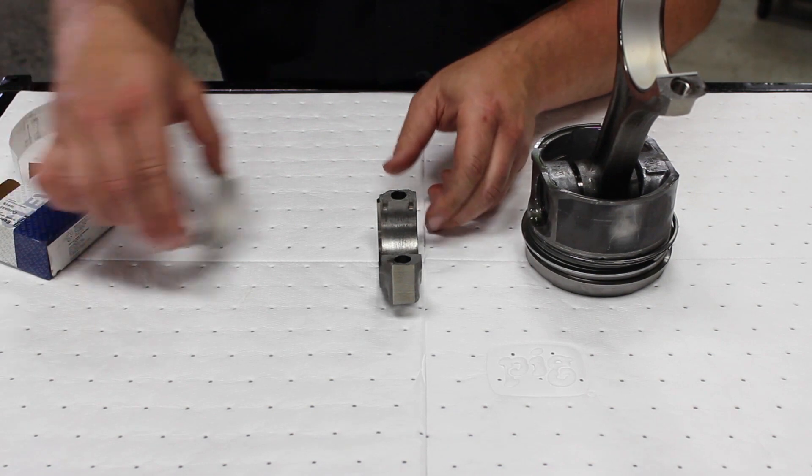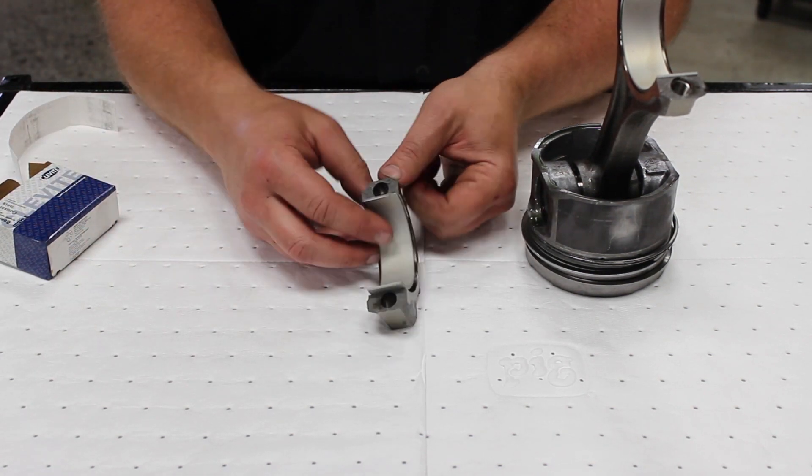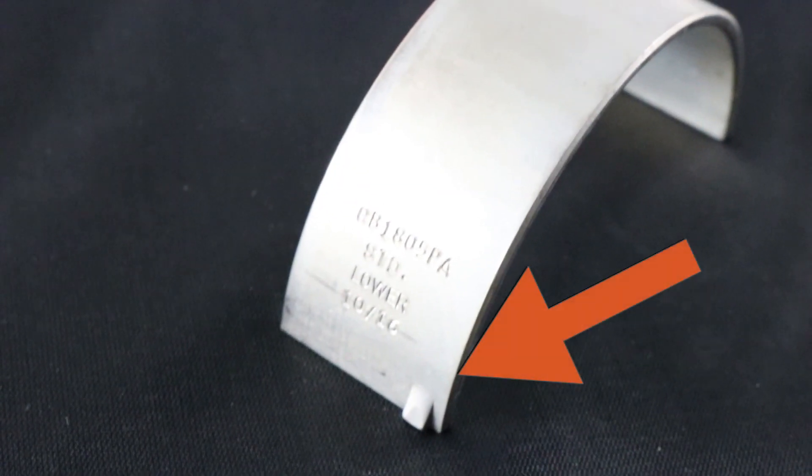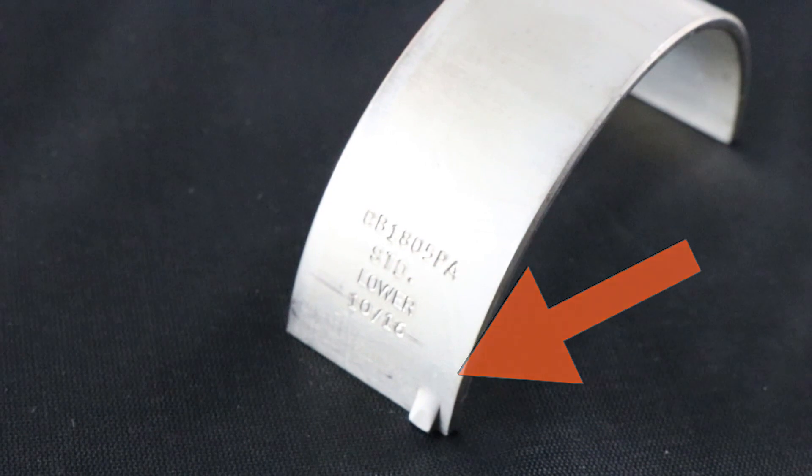On the cap side, we use the bearing with the tang inset from the edge, like so.